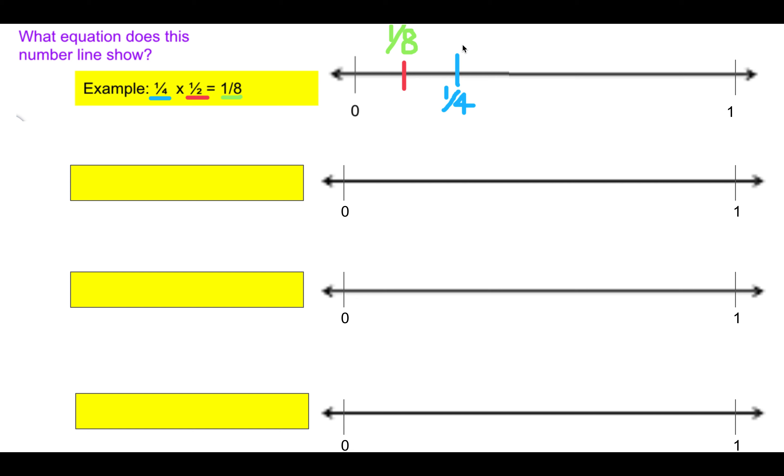So I'll show you a picture like this that has one fourth. And you can see that I marked with a red line half of that one fourth, and the answer in green is one eighth. So my equation here is one fourth times half equals one eighth.